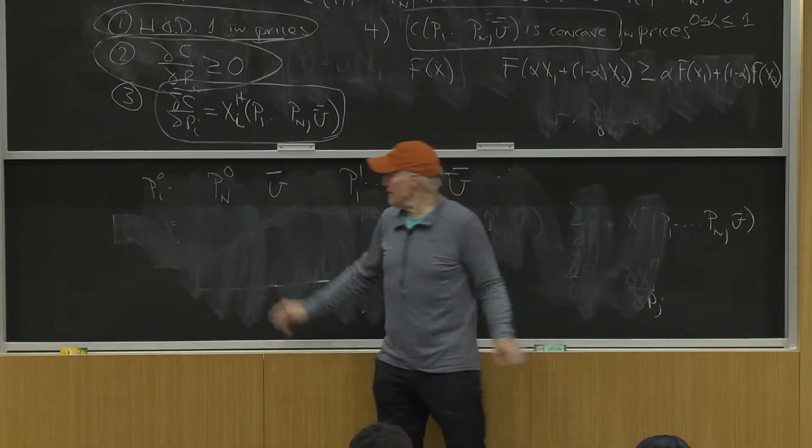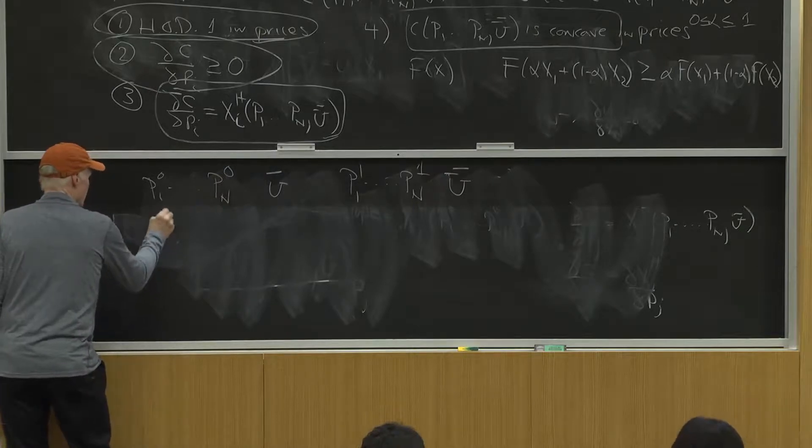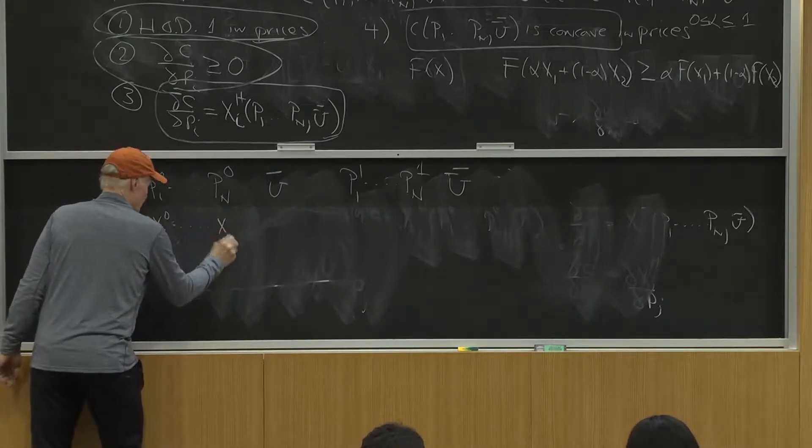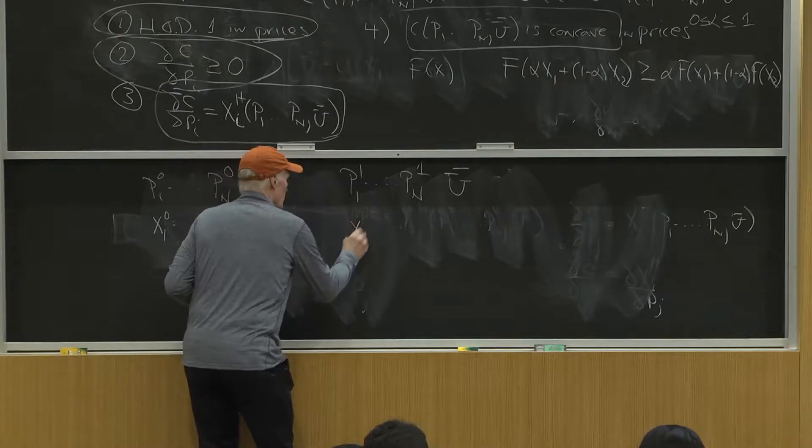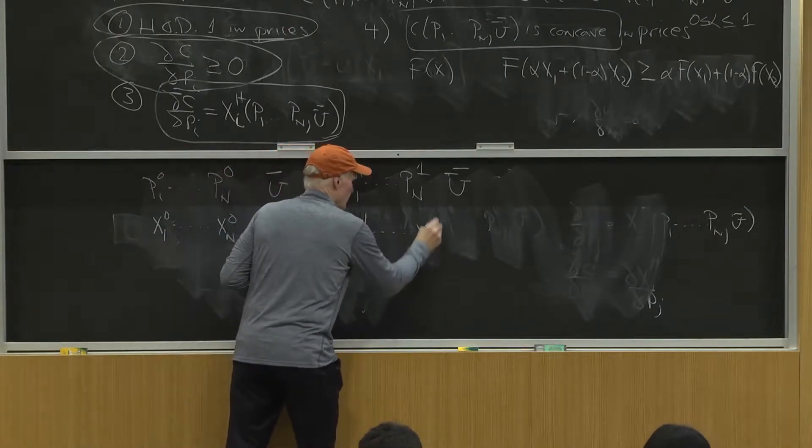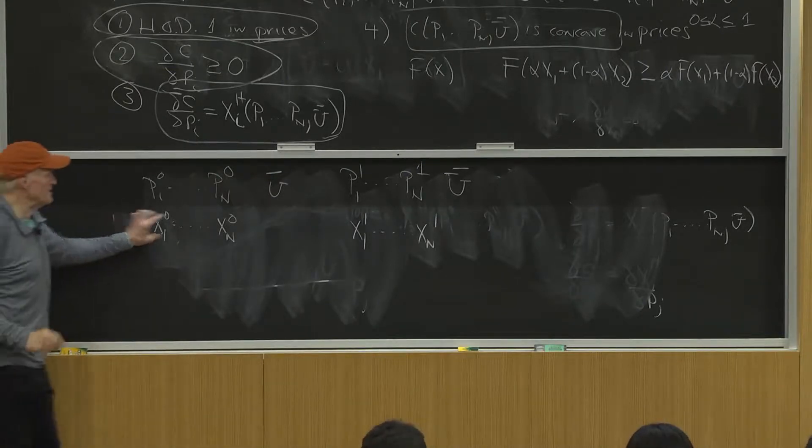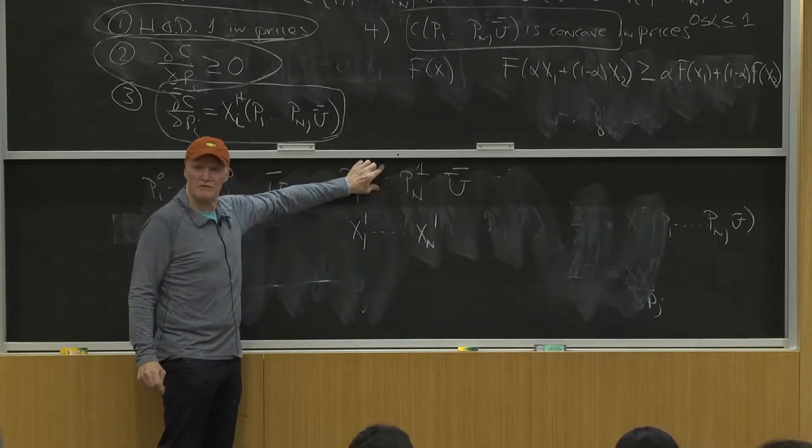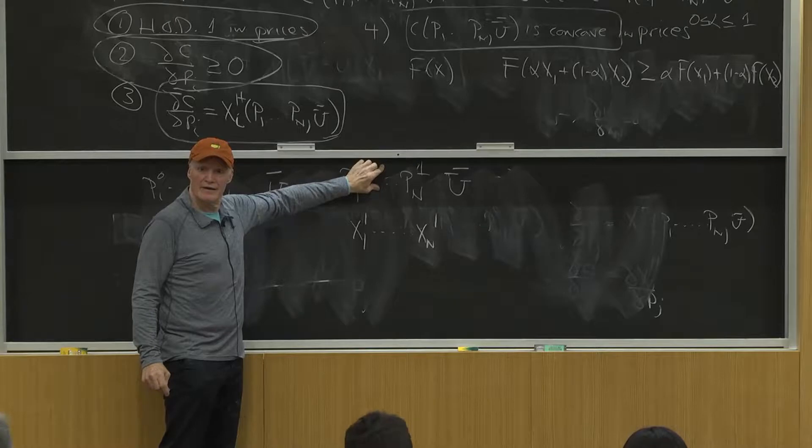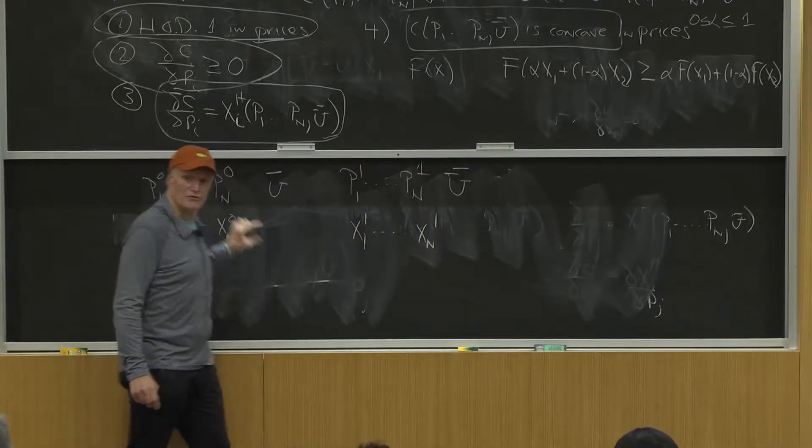At this price vector, let's assume I choose x1^0 up to xn^0, those are my optimal choices at those prices. And at this one, x1^1 up to xn^1 are the quantities I choose at those prices. This is the cost minimizing bundle at those prices. This is the low cost bundle when these are the prices, this is the low cost bundle when those are the prices.